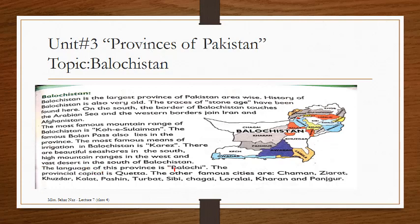The language of this province is Balochi. The provincial capital is Quetta. The other famous cities are Chaman, Ziarat, Khuzdar, Kalat, Pashin, Turbat, Sibbi, Chaghi, Laralai, Kharan, and Panjgur.